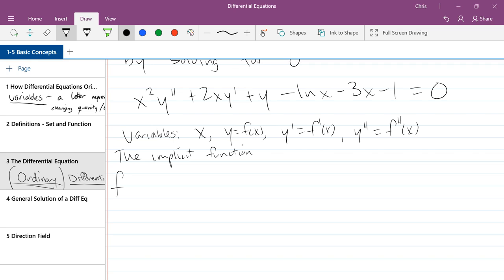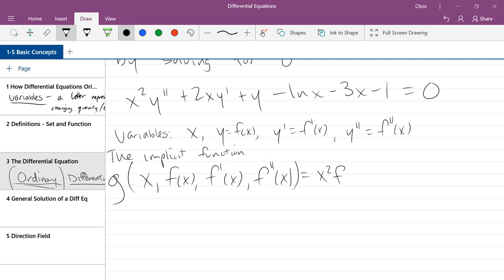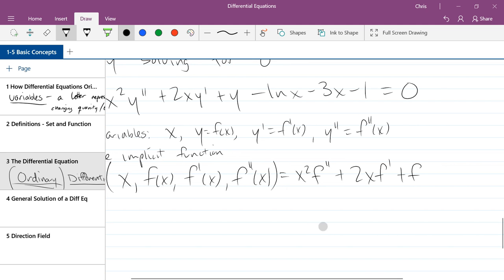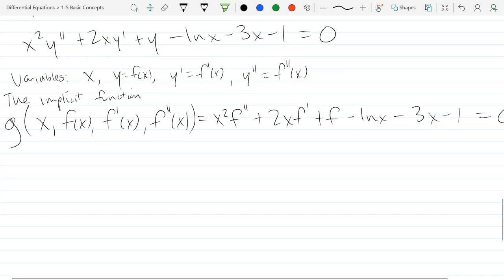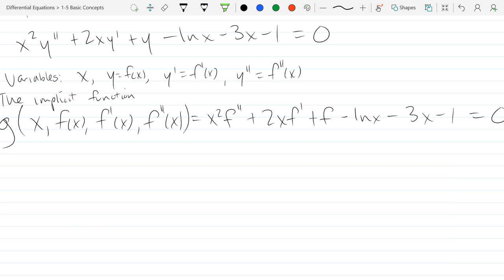Oh, that's not good. Can't use f so many times. The implicit function cannot be named f if I used f for one of the inputs basically. So we'll go implicit function. Let's call it g. So it'll be g of x, f of x, f prime of x, and f double prime of x. And this function is the one we just wrote down. X squared times 2xf prime plus f minus ln x minus 3x minus 1 equals zero. All right, now we have written it as an implicit function of these variables. So there is the implicit function.